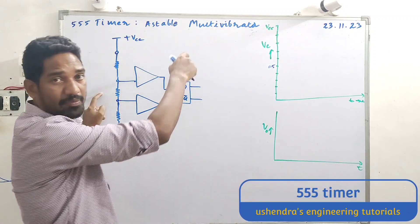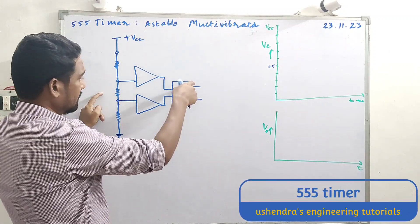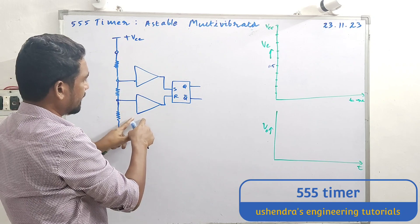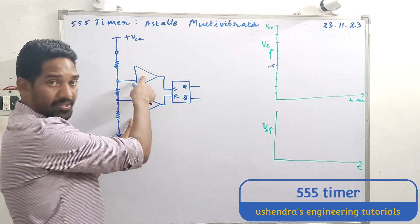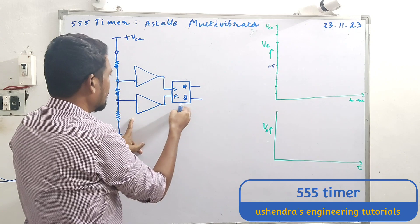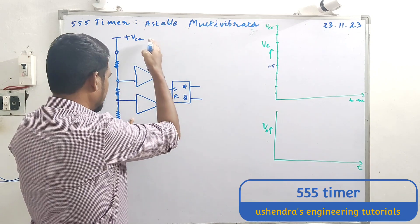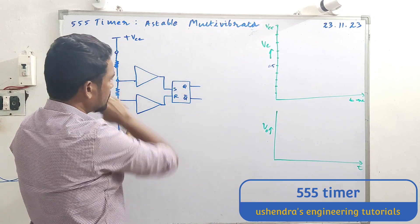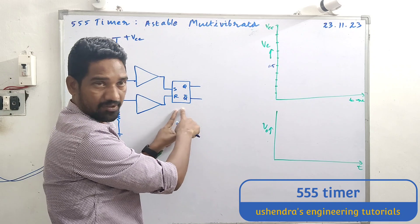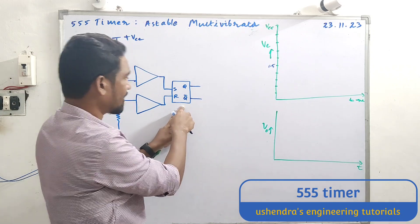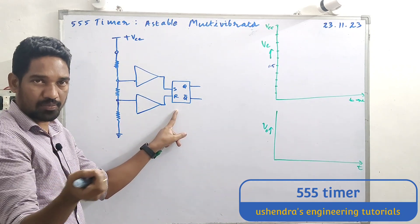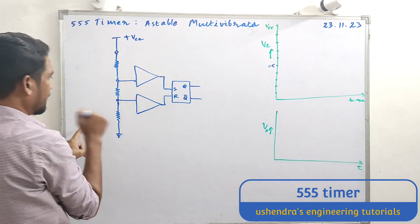555 timer as an astable multivibrator. Starting with the internal circuit diagram of the 555 timer. There are two comparators: upper comparator and lower comparator. The game-changer here is an SR flip-flop. We have the SR flip-flop character and truth table as a little idea — not going into great depth.